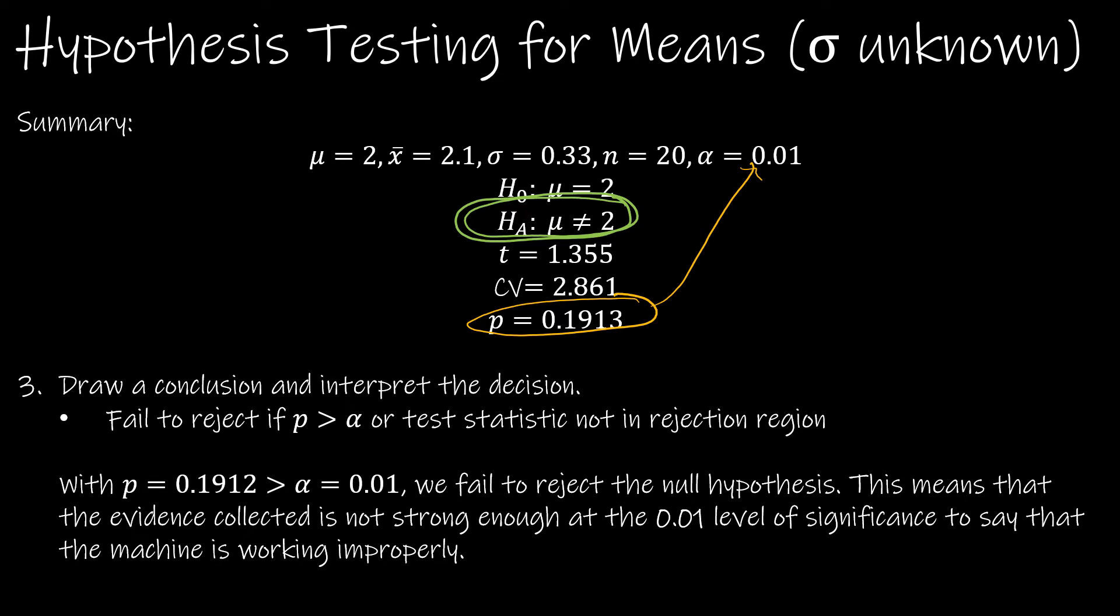So there's not strong enough evidence at the 0.01 level of significance to say the machine is working improperly.